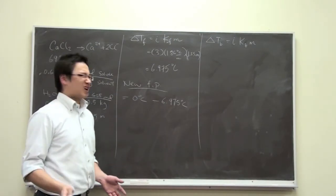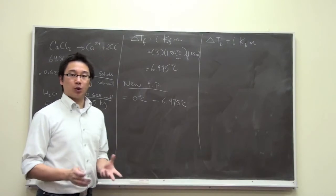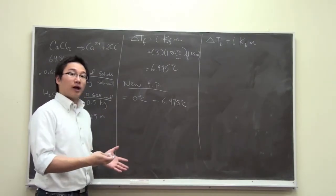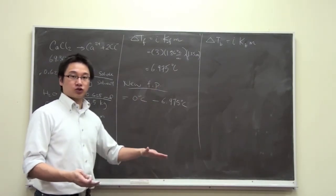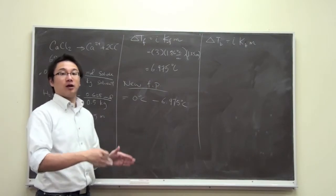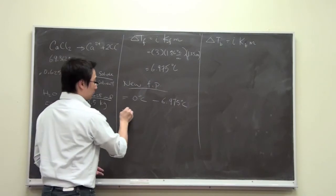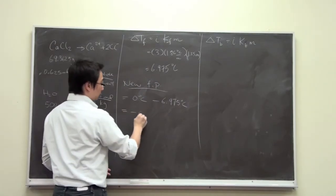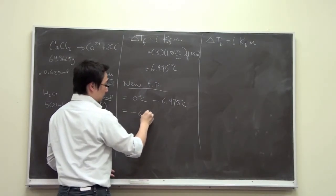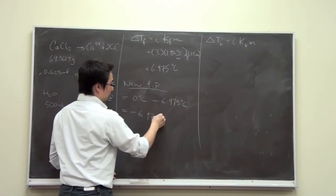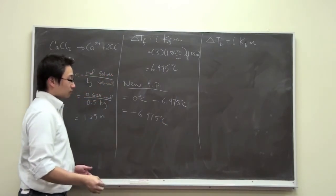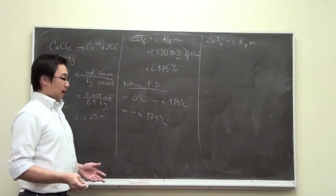Now you may ask, how do we normally subtract or add? Well, just understand the term freezing point depression. We are trying to depress the freezing point. So it's got to be lower. It has to be lower. So this is why we subtract. And the new freezing point is negative 6.975 degrees Celsius.